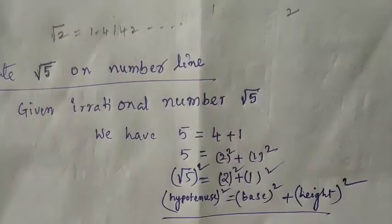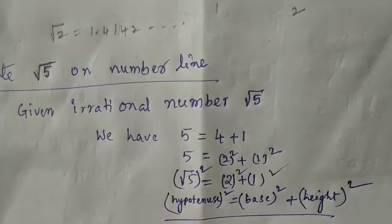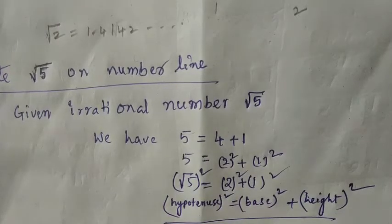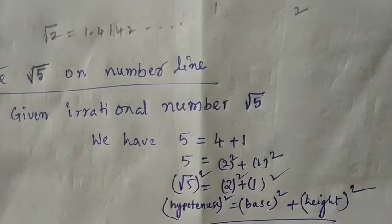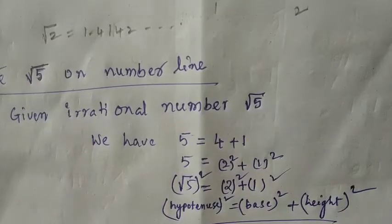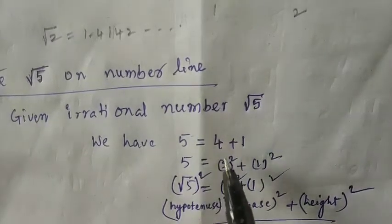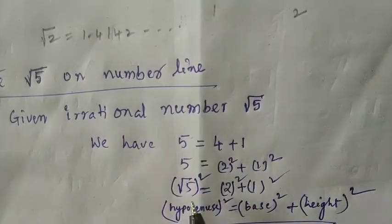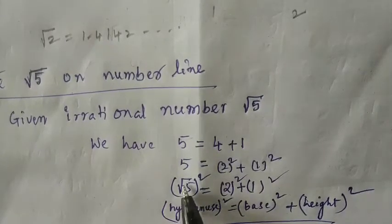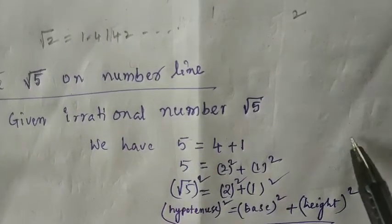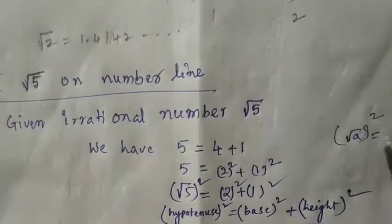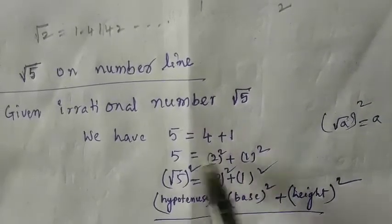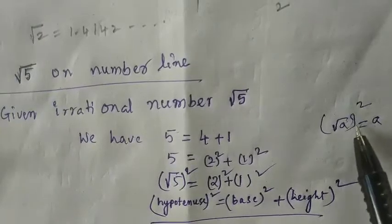We are going to locate root 5 on the number line. The given irrational number is root 5. We have 5 equal to 4 plus 1, which means 5 equals 2 squared plus 1 squared. Again, 5 can be written as root 5 whole square, since root A whole square equals A.